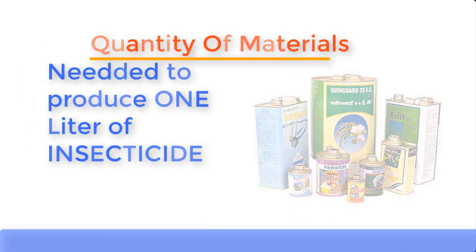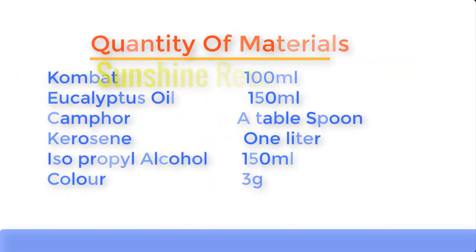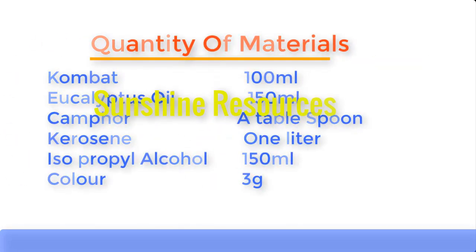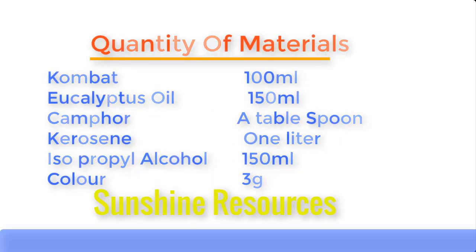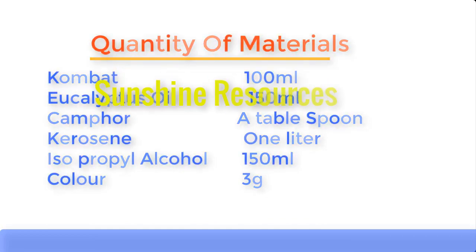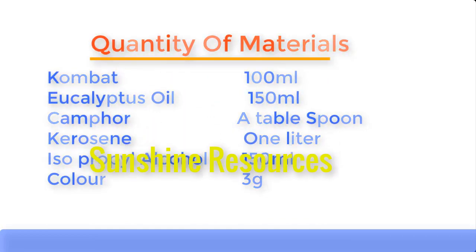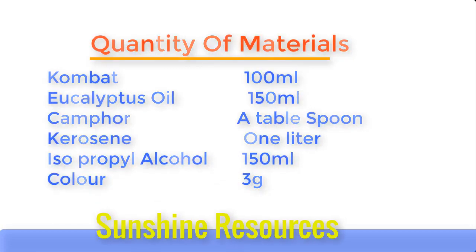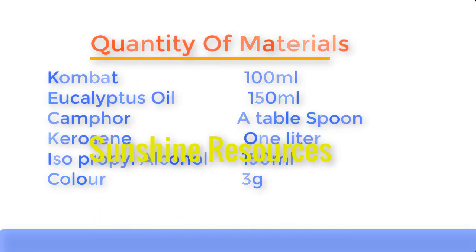Now let's establish the quantity of materials needed to produce one liter of insecticide: compact 100 ml, eucalyptus oil 150 ml, camphor one tablespoon, kerosene one liter, isopropyl alcohol (IPA) 150 ml, and color three grams. Now let me introduce you to these chemicals one by one before we go into the mixing.